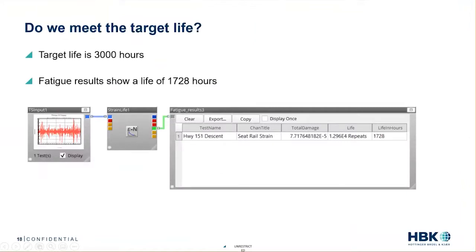Going back to the objectives — did we meet the target life? The answer is no. We calculated the fatigue life of our structure based on measured loading and found we did not meet the target. The target life was 3,000 hours, but we only achieved 1,728 hours — approximately 60% of our target life. This brings us to the next question and objective: how much stress do we need to reduce in order to meet the target life?